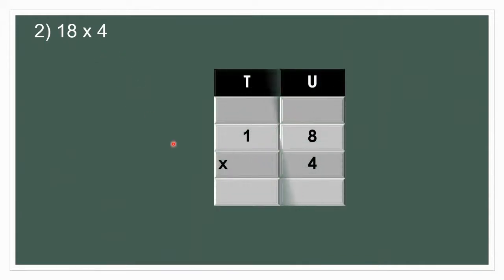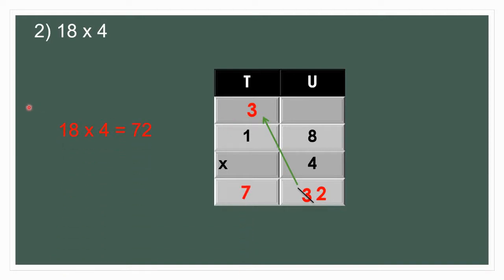Next is 18 multiplied by 4. Let's arrange it in the vertical form. We are going to multiply 8 by 4. 8 fours are 32. This 3 we have to carry over — 3 tens will go here at the top. Now, 4 ones are 4, and plus this 3 we add: 4 plus 3 is 7. So our product is 72. 18 multiplied by 4 is equal to 72.